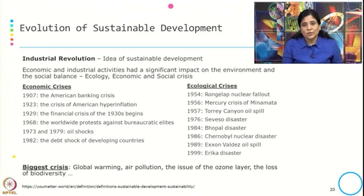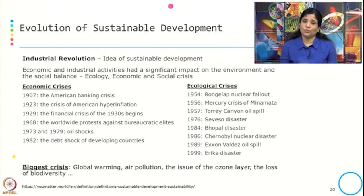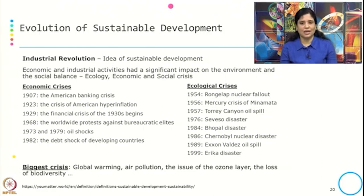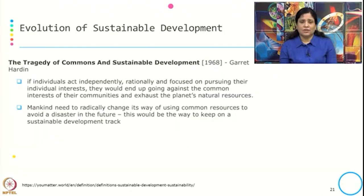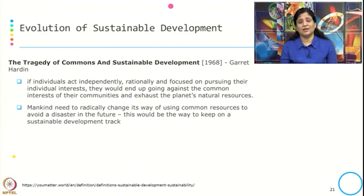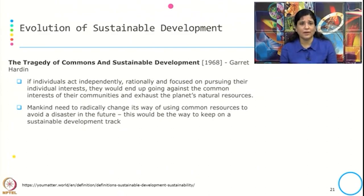The idea of sustainable development started with the industrial revolution, which led to many crises, because the economic and industrial activities had a significant impact on the environment and social balance. Going further, in 1968, Garrett Hardin brought out the concept of the 'tragedy of commons' and how it is linked to sustainable development.